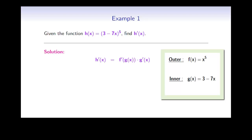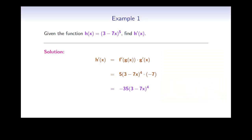Computing these derivatives, we see that h prime of x is 5 times the quantity 3 minus 7x to the fourth power times negative 7. Here, 5 times the quantity 3 minus 7x to the fourth power represents the derivative of the outermost function x to the fifth evaluated at the innermost function 3 minus 7x, times negative 7, which represents the derivative of the innermost function 3 minus 7x. Simplifying, the derivative is negative 35 times the quantity 3 minus 7x to the fourth power.